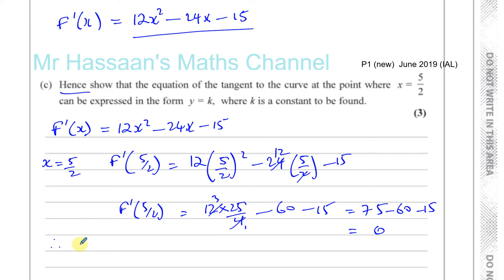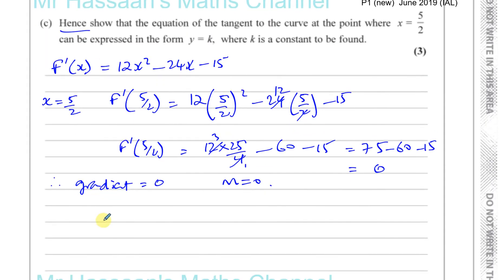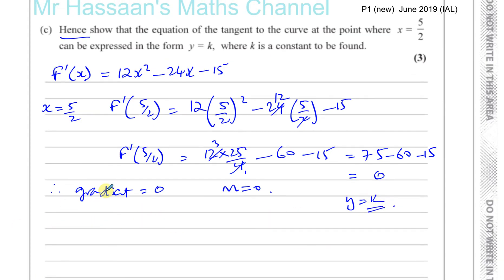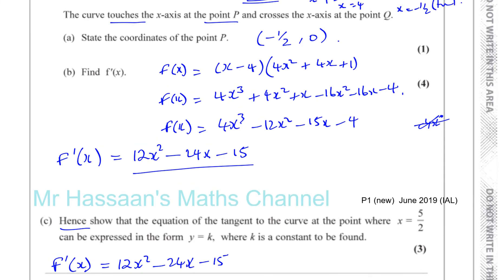So the gradient is equal to 0 at the point where x equals 5 over 2. Since the gradient is 0, the tangent is horizontal — of the form y equals k. We need to find the y value, so we substitute x equals 5 over 2 back into the original function f of x equals x minus 4 times 2x plus 1 squared.